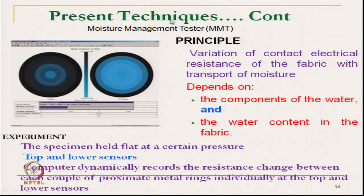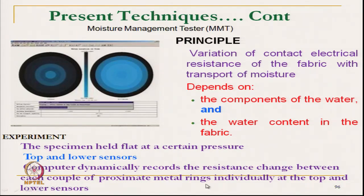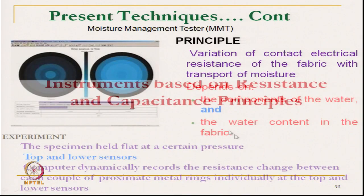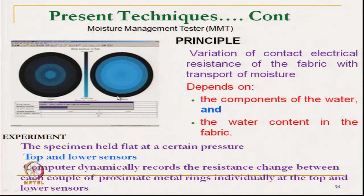In the moisture management tester, the principle is the variation of contact electrical resistance of the fabric with transport of moisture. The specimen is held flat at a certain pressure with top and bottom sensors. A computer dynamically records the resistance change. As water is supplied, the computer dynamically records the change in resistance between each couple of proximity metal rings — there are a number of metal rings at top and bottom layers — and from this the water flow can be measured.